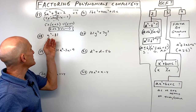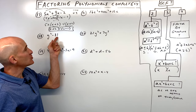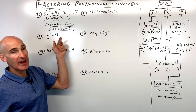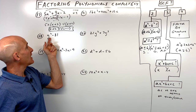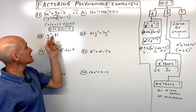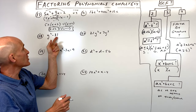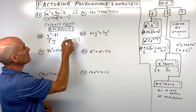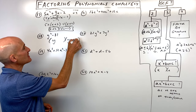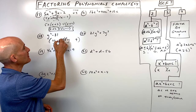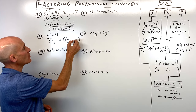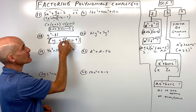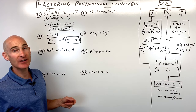Number eighteen has two terms, no greatest common factor. It's a difference of two squares: y squared and 81, since 9 times 9 is 81. One factor adds, one subtracts — you get the sum and difference pattern, fully factored.